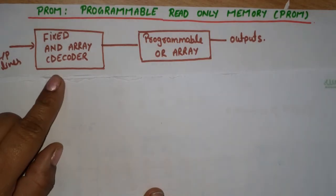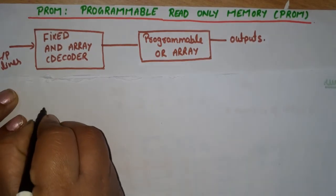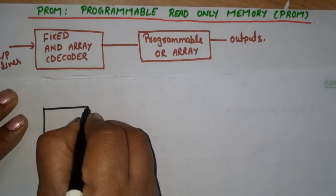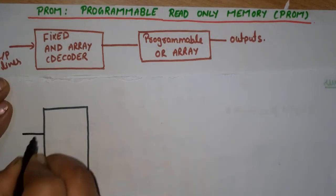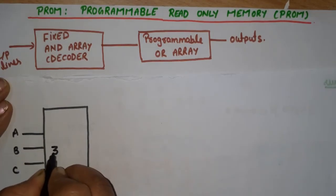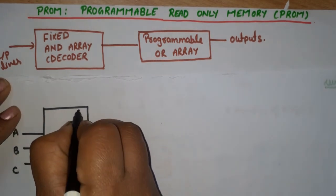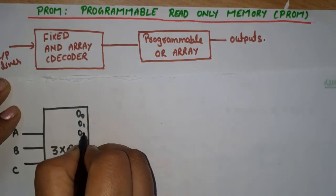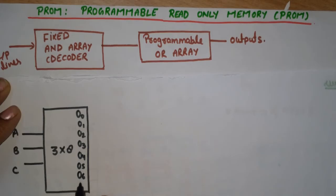Now the second method: how can we draw the logic diagram using PROM? As I mentioned earlier, PROM is a combination of a fixed AND array and a programmable OR array. The fixed AND array is replaced by a 3-to-8 decoder. The inputs are A, B, C, and the decoder outputs are O0, O1, O2, O3, O4, O5, O6, O7 — 8 outputs total.